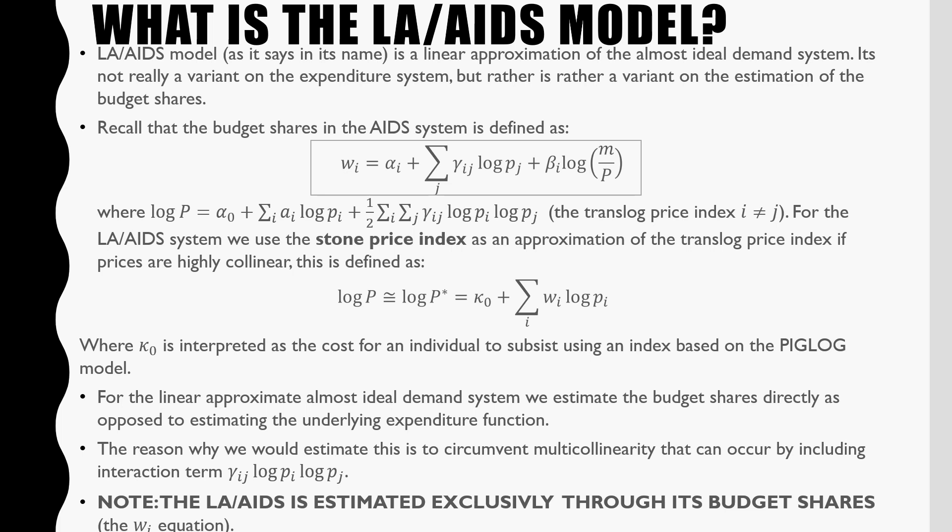Kappa nought could be interpreted as the cost for an individual to subsist using an index based on the PIG log model. For the Linear Approximate Almost Ideal Demand System, we estimate budget shares directly as opposed to estimating the underlying expenditure function, which we would normally do if we were appropriately estimating the Almost Ideal Demand System. The reason why we estimate this is to circumvent issues of multi-collinearity that could occur when we have our interaction term log pi and pj, so that would end up just getting dropped out in most softwares. I know at least in Stata that would happen. Just a last point: the Linear Approximate Almost Ideal Demand System is estimated exclusively through its budget shares.